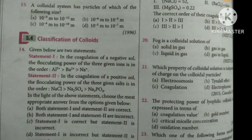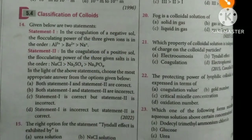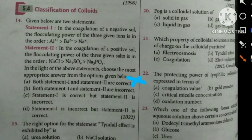Regarding statements about sol charge: In a negative sol, the diffuse layer has a given ion with charge power of 3. Statement 1 is incorrect and statement 2 is also incorrect. So we have option C — statement 1 correct and statement 2 incorrect — as the answer.